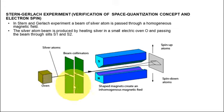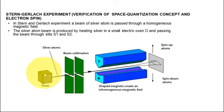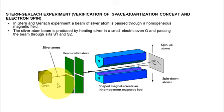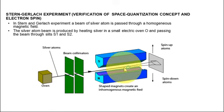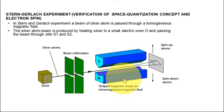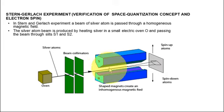In the experimental arrangement, the first part is the oven where silver atoms are heated. These silver atoms pass through two slits or collimators which make the beam straight. The next important part is the magnet — you can see here the north pole and south pole. As you can notice from the figure, there is a difference between the magnetic poles.